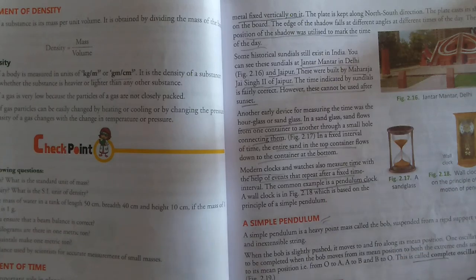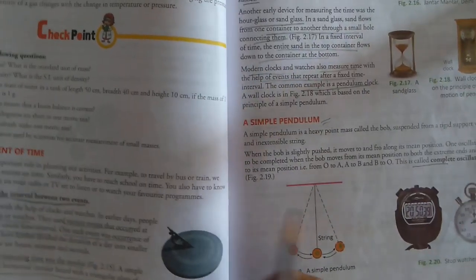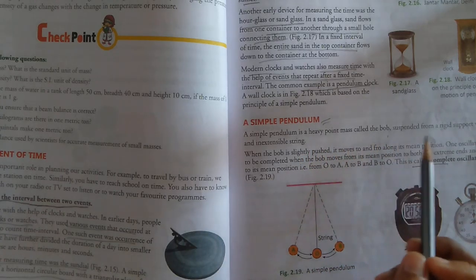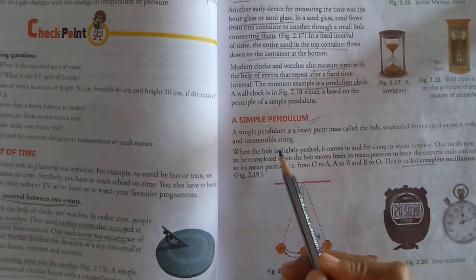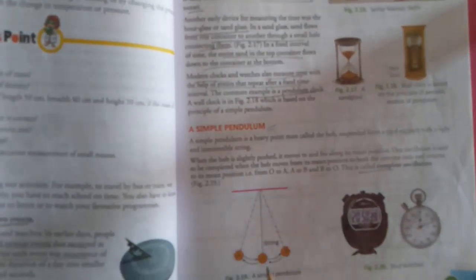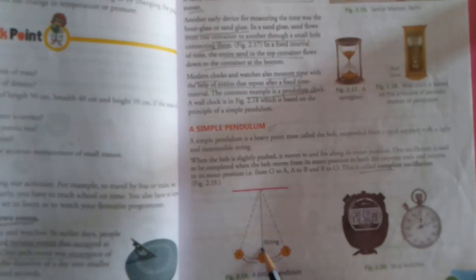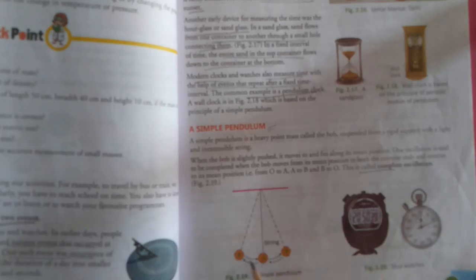Modern clocks and watches also measure time with help of events that repeat after a fixed interval of time. The common example is pendulum clock. Simple pendulum is a heavy point mass called the bob suspended from a rigid support with a light and inextensible string. When the bob is slightly pushed, it moves to and fro along its mean position. One oscillation is set to be completed when the bob moves from its mean position to both extremes and returns back to mean position.